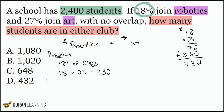We're going to continue on with art now. The percentage of students that joined art was 27%. So we'll do 27% times 2,400. When we convert it, we can just do 27 times 24, using that same mental math trick.